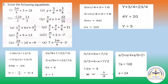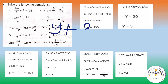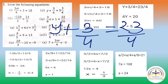Now we will solve question number 2: y plus 3 by 4 equals to 5 and 3 by 4. Here 5 and 3 by 4 is a mixed fraction, so you have to write it as a proper fraction. You will multiply 4 into 5 to get 20, then 20 plus 3 is 23 by 4. So now we have y plus 3 by 4 equals to 23 by 4.